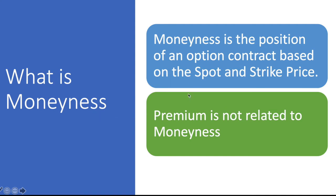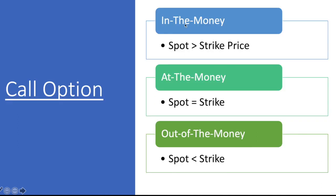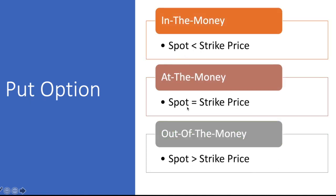From a PPT point of view, this is the articulation. Moneyness is the position of an option contract based on the spot and strike price. Premium is not related to moneyness. So in-the-money, spot greater than strike. At-the-money, spot equals strike. Out-of-the-money, spot less than strike. Similarly for put option, I have put it in the form of a slide.